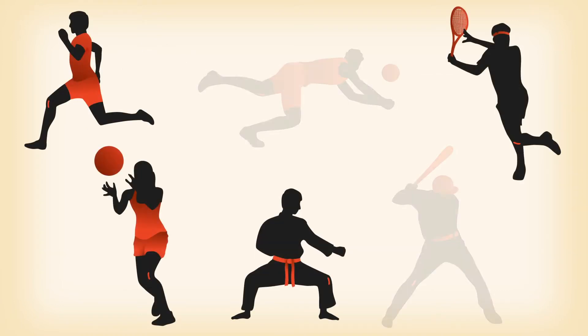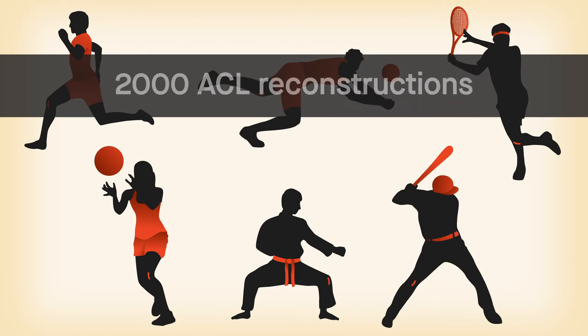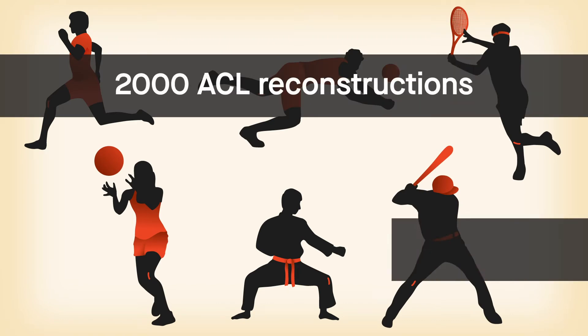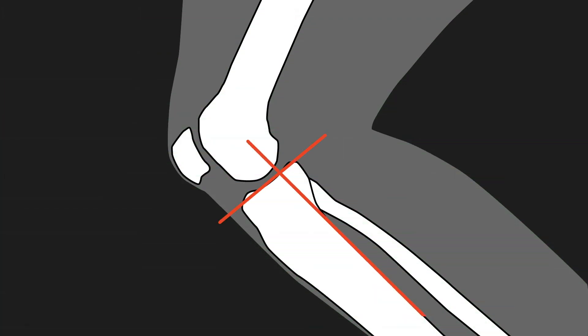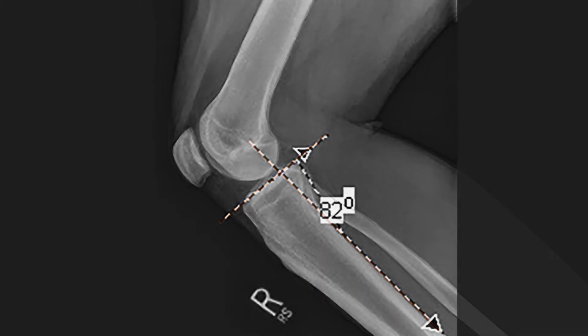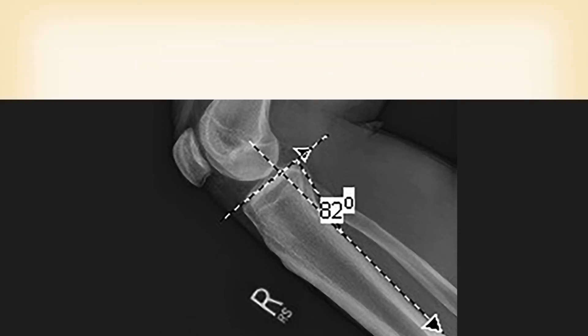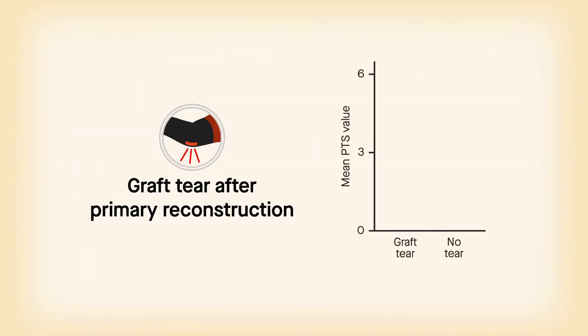To explore that relationship, researchers examined more than 2,000 ACL reconstructions with patellar tendon autograft with a mean follow-up of 11.6 years. The PTS was measured prospectively using radiographs by subtracting from 90 degrees the acute angle formed by intersecting lines drawn along the medial tibial plateau and the posterior tibia.